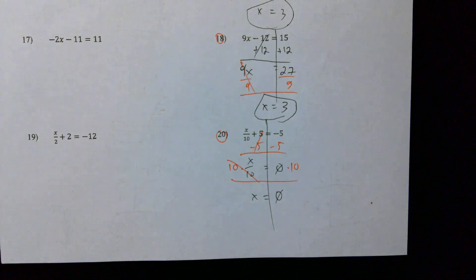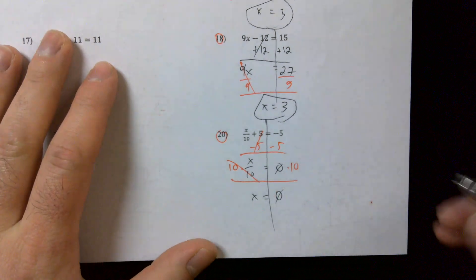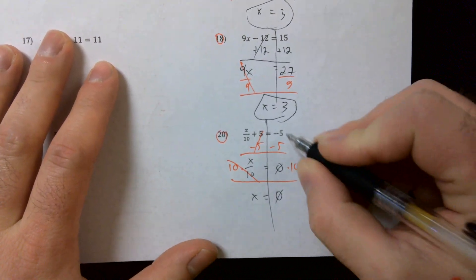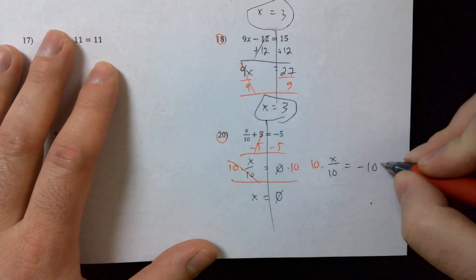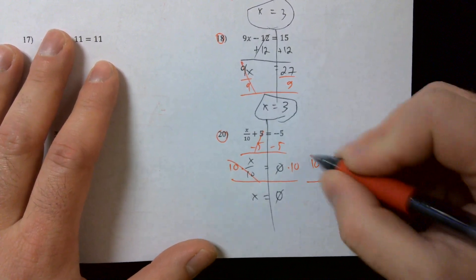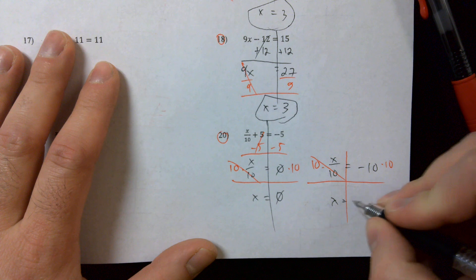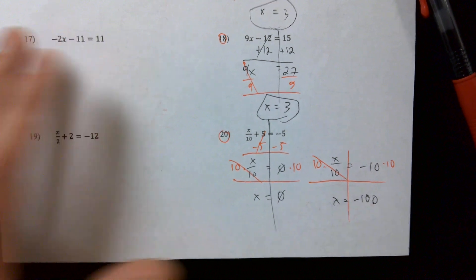But again, these are those quick mistakes. You feel confident, you're going super fast, you might be able, or you might end up making one of those mistakes. So negative five minus five, as you said, is negative ten. Then when we multiply by ten, we get negative one hundred. Sounds right to me.